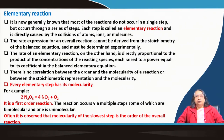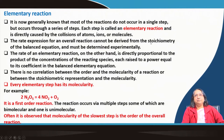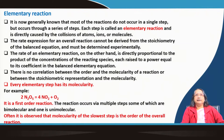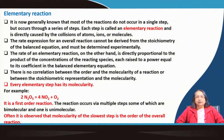The rate expression of an overall reaction cannot be derived from the stoichiometry of the balanced equation alone. We cannot write the rate expression without knowing the order, and to know the order we must do experiments. The rate of an elementary reaction, on the other hand, is directly proportional to the product of the concentrations of the reacting species, each raised to a power equal to its coefficient in the balanced elementary equation.